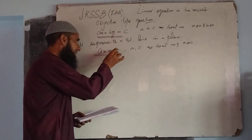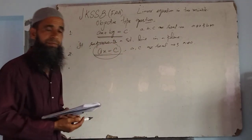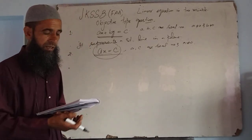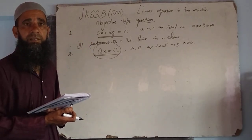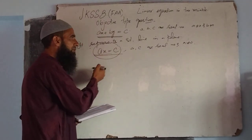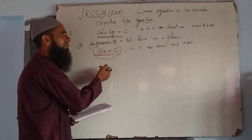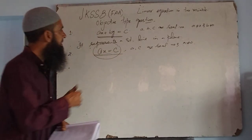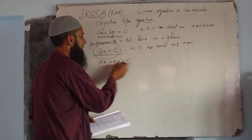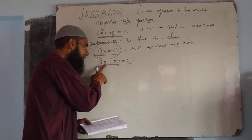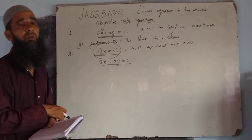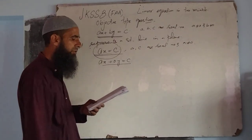It is a linear equation. Clearly it represents a straight line. All options — first, second, and third — seem correct. But let us check: ax is equal to c. Y is absent here. This can be written as ax plus 0 into y is equal to c. This particular linear equation represents a line parallel to the y-axis.